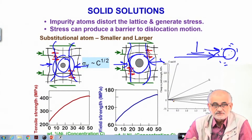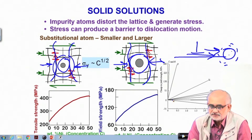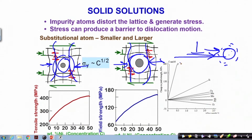There is a limit to how many solute atoms you can pack into the material, dictated by the equilibrium solubility. However, even with very small amounts of interstitial elements like carbon or nitrogen, the strength can increase very drastically. For most other substitutional elements, strengthening occurs through solid solution strengthening.